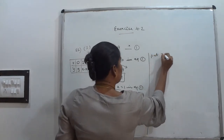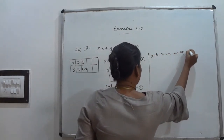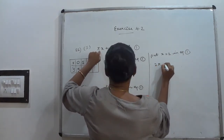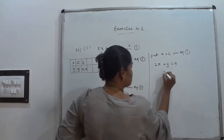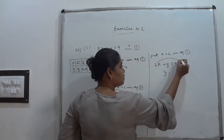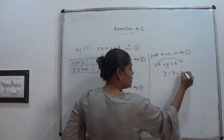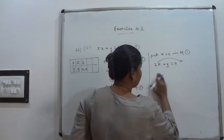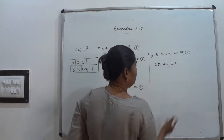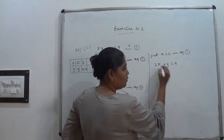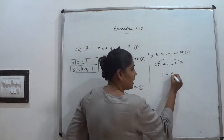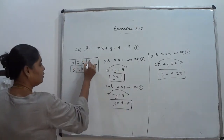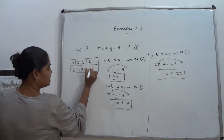Put x = 2 in equation number 1. π × 2 = 2π, so 2π + y = 9. Moving 2π to the other side: y = 9 − 2π. When x = 2, y = 9 − 2π.